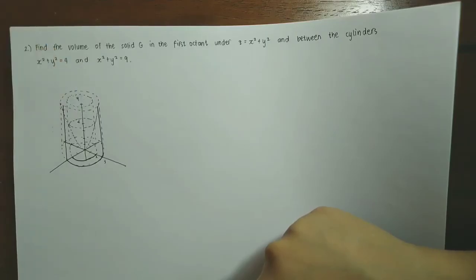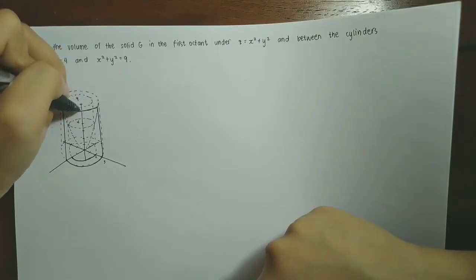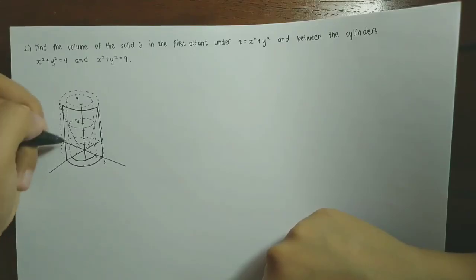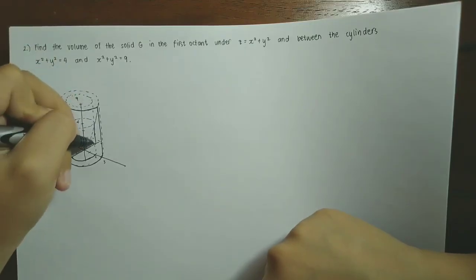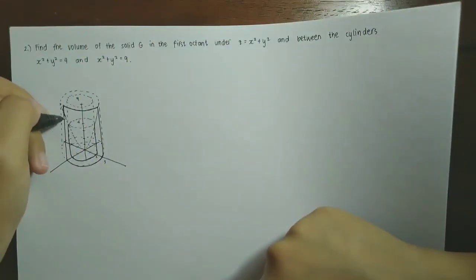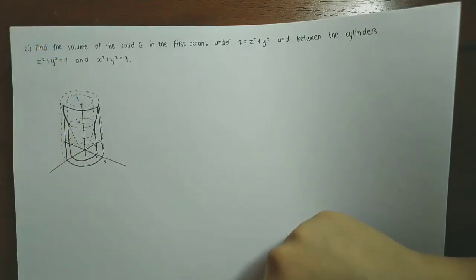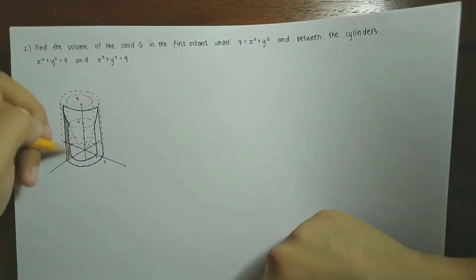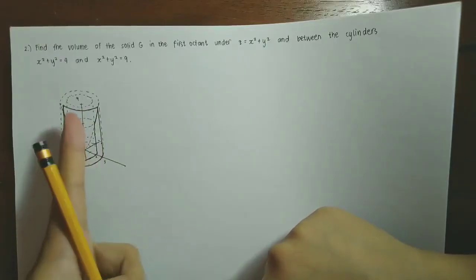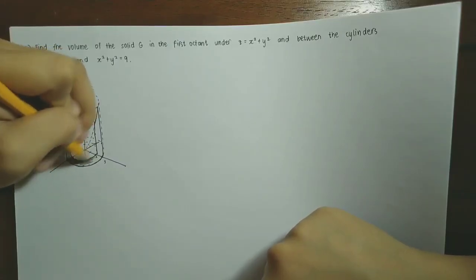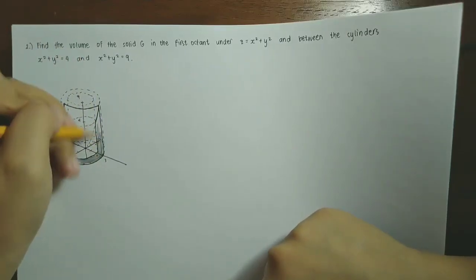So the region is under the paraboloid z = x² + y² and between the two cylinders. Since this is the first octant, we are restricted accordingly. The drawing is a bit complex, but the triple integral setup follows from the projection and bounds.